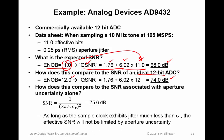How does this compare to the signal-to-noise ratio associated with the aperture uncertainty alone? Well, here's the relevant expression. And I get 75.6 dB using 0.25 picoseconds as the aperture jitter. So as long as the sample clock exhibits jitter much less than the aperture uncertainty of this device, then the effective signal-to-noise ratio will not be limited by the aperture uncertainty.